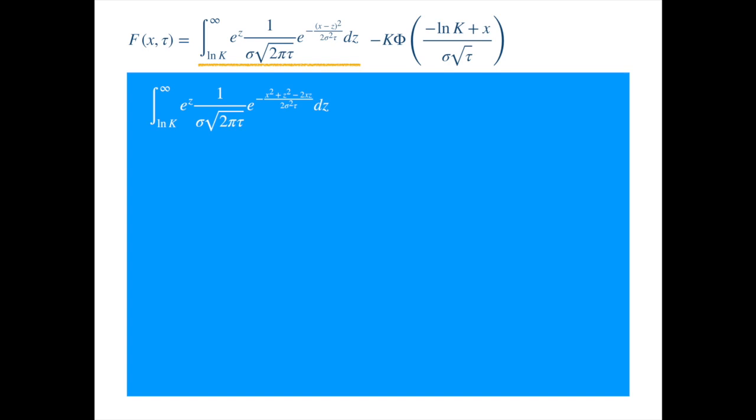Now, we have the exponential of z as an additional term, which initially appears to ruffle things up a bit, but it really amounts to completing a square. Without further ado, let's combine the two exponentials.